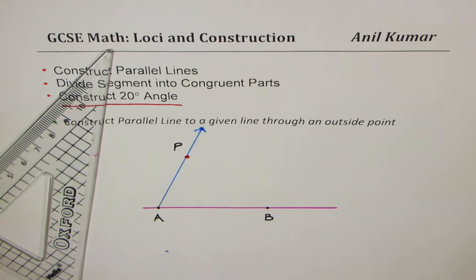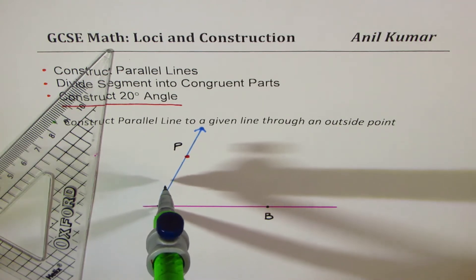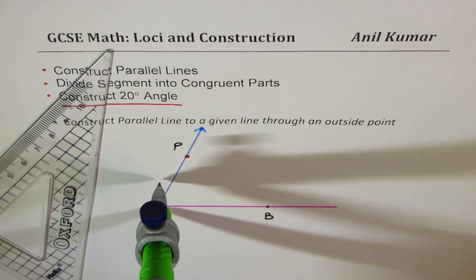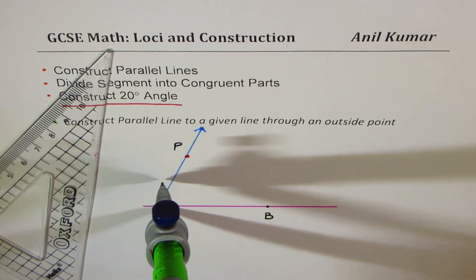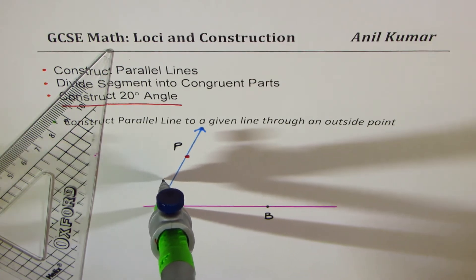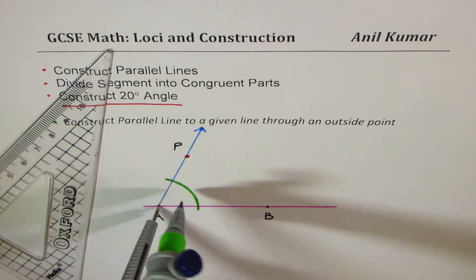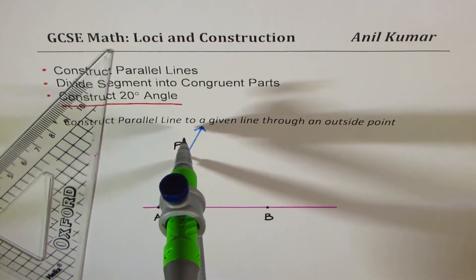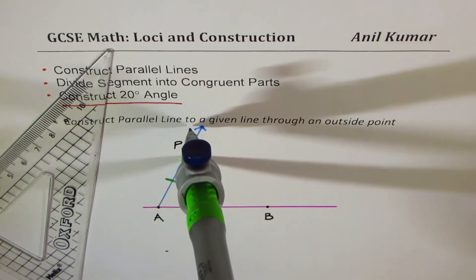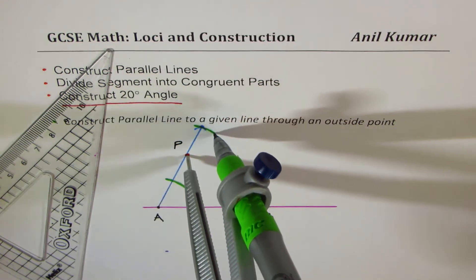The idea is to construct an angle with the same measure at P as at A. If I have an angle at A and somehow construct equal angles at P, then my job is done — those will be the corresponding angles between parallel lines. To do that, we'll open the compass, form an arc as shown, place it at point P, and form another arc.